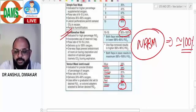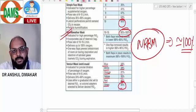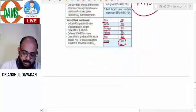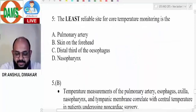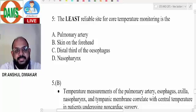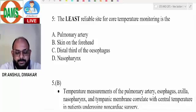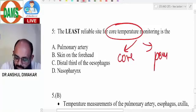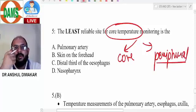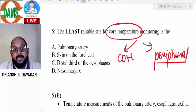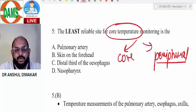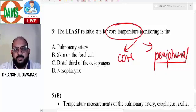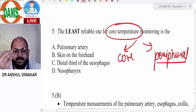Last question: the least reliable site for core temperature monitoring. Temperature can be core or peripheral. Peripheral are all places you can measure as an intern - skin, oral, rectal, axilla. Core would be deep body organs, always some invasive technique or not normally possible.